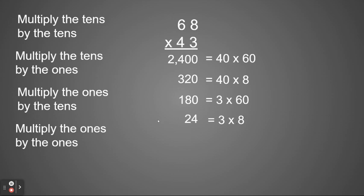Once I have those four partial products, I'm going to add them together. So adding up, I have four in my ones place. 2 plus 8 is 10, plus 2 more is 12. I'll carry my 1. 4 plus 3 is 7, plus 1 is 8, plus 1 more is 9. And then bring down my 2. So I have 2,924 is my answer.